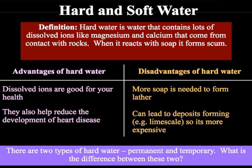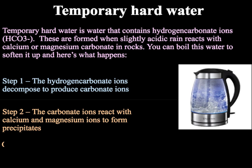There are two types of hard water we need to know: permanent and temporary. Temporary hard water, as its name suggests, is a version of hard water that is easy to remove. Temporary hard water contains hydrogen carbonate ions, HCO₃⁻. These are formed when slightly acidic rain reacts with calcium or magnesium carbonate in rocks. However, we can boil this water to soften it.